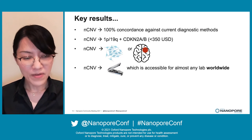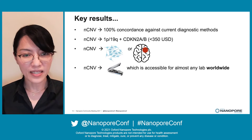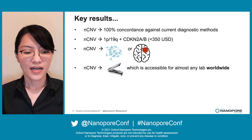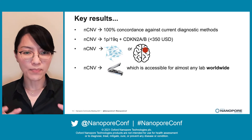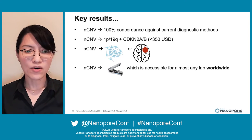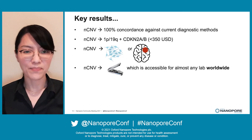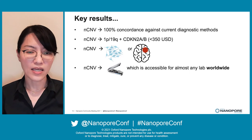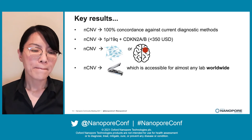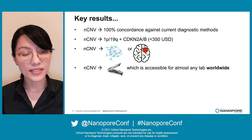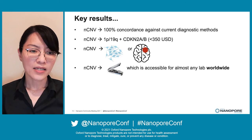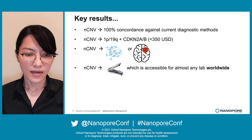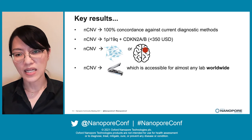This is the key result. After testing 19 samples, we found 100% concordance against current diagnostic methods. Using NCNV, we can detect both the 1p/19q and CDKN2AB markers for some samples. This method is also cheaper than FISH — less than $350 USD versus around $500 for FISH. It can be applied to cell lines or clinical samples, and because we use the MinION, this machine is accessible to almost any lab worldwide.